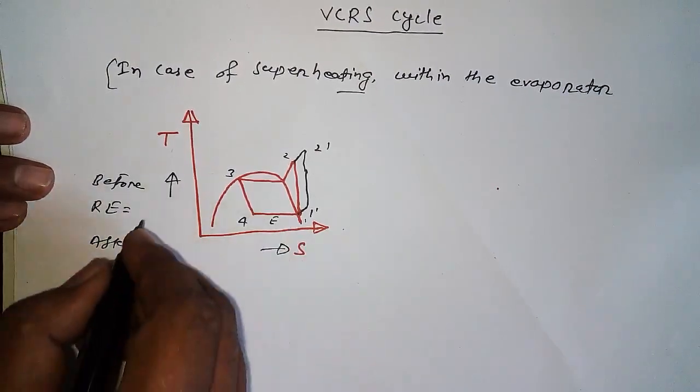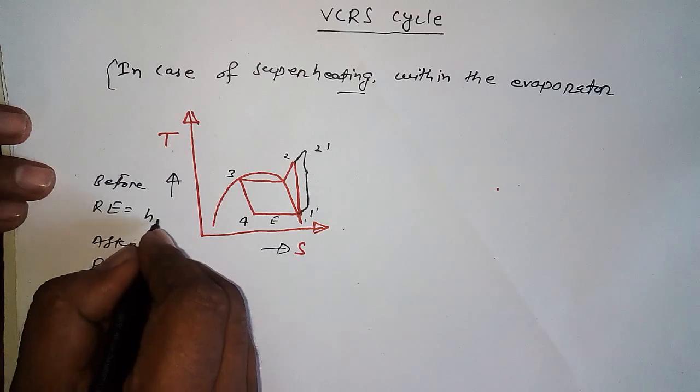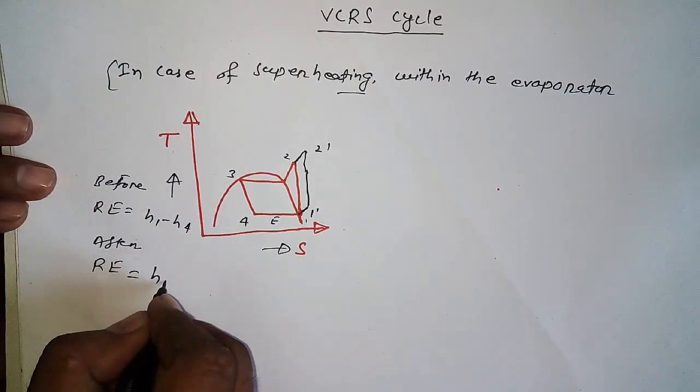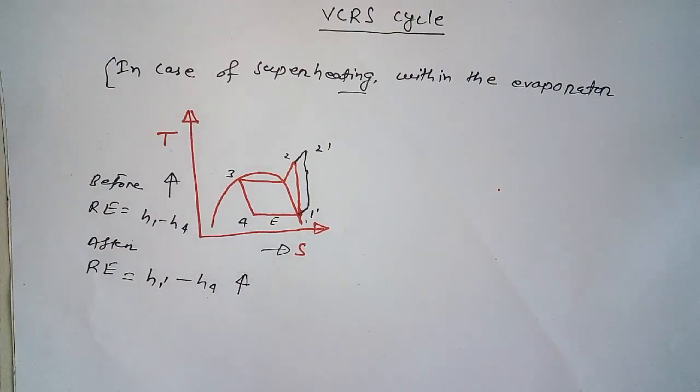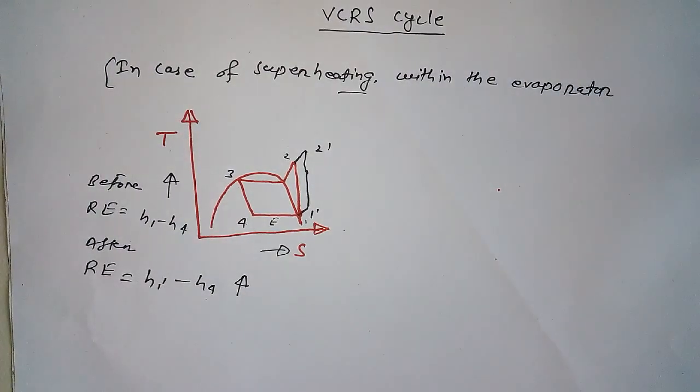Refrigerant effect: this is h1 minus h4, and after it's h1 dash minus h4. Obviously, the refrigerant effect is increasing.